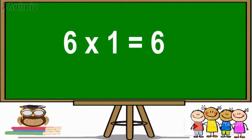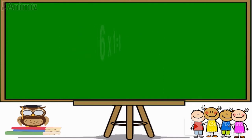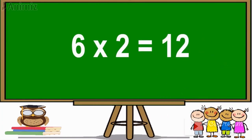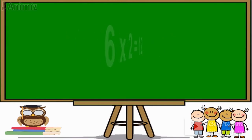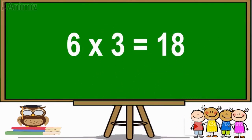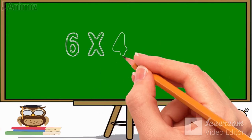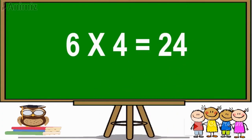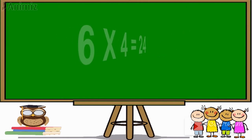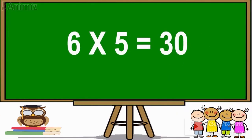6 ones are 6. 6 twos are 12. 6 threes are 18. 6 fours are 24. 6 fives are 30.